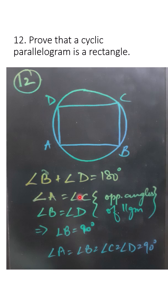Similarly A and C will also be 90 degrees. So all the 4 angles are 90. So this is a rectangle.